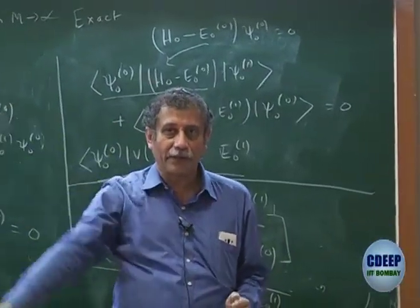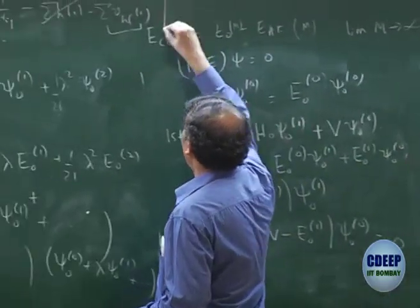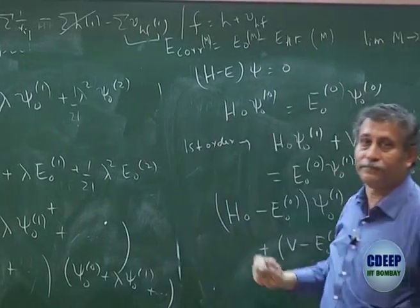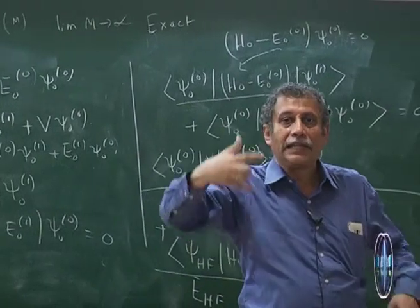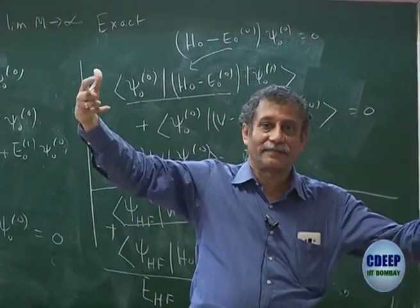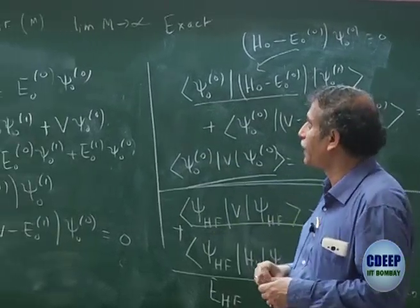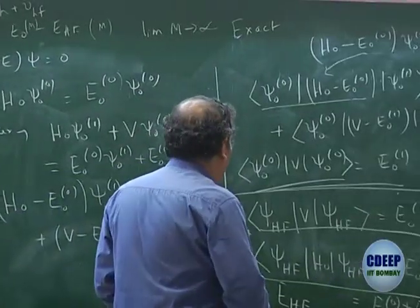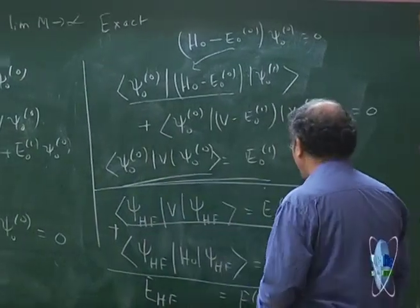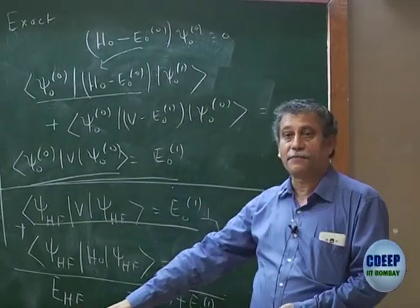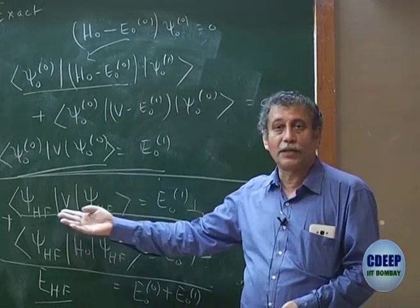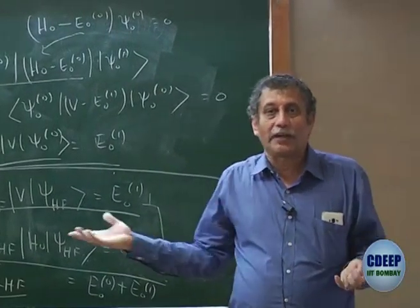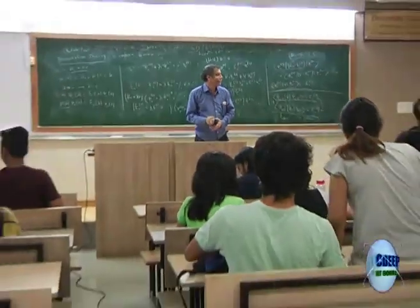This is what I call the Hartree-Fock potential in the Fock operator. So V is the sum of 1/rᵢⱼ minus the Hartree-Fock potential — that V has been self-consistently evaluated. We will come back to this and evaluate ⟨ψ_HF|V|ψ_HF⟩ using the Slater rules and verify that we get the correct Hartree-Fock energy. So we will come back to this in the next class.